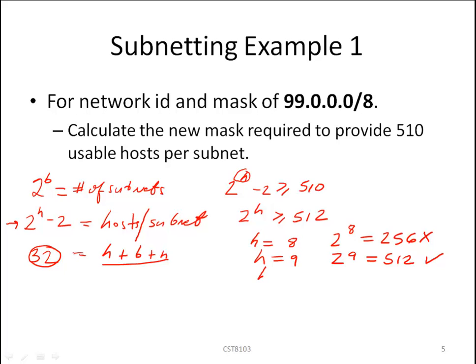Now if H equals 10, 2 to the 10 would be equal to 1024. This one also meets the criteria however it's not the smallest value of H. We would be left with too many unused addresses. Wasted IP addresses. So here our calculations have led us to a value of H equals 9.